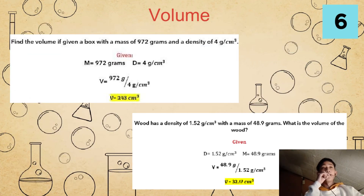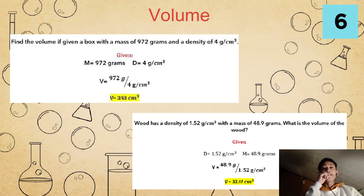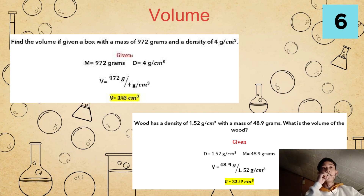For our volume examples, first: find the volume of a given box with a mass of 972 grams and a density of 4 grams per cubic centimeter. Given: mass equals 972 grams, density equals 4 grams per cubic centimeter. We will use the formula: volume equals mass over density. Substituting: volume equals 972 grams over 4 grams per cubic centimeter. Our final answer will be 243 cubic centimeters.